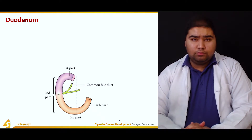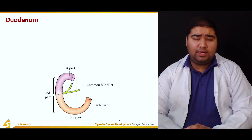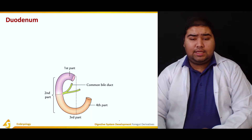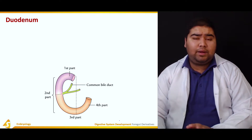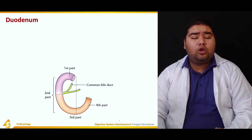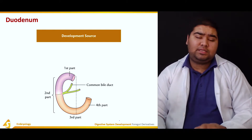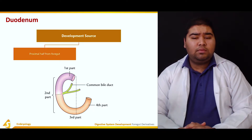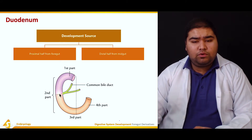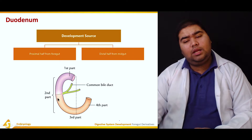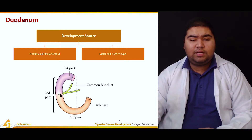Developmentally, the duodenum has been divided into two parts. The upper half of the duodenum is derived from the foregut and the lower half is derived from the midgut. The duodenum is a C-shaped structure divided into four adult parts. The proximal half is developed from the foregut, shown in purple, and the distal half is developed from the midgut, shown in brown to orange.